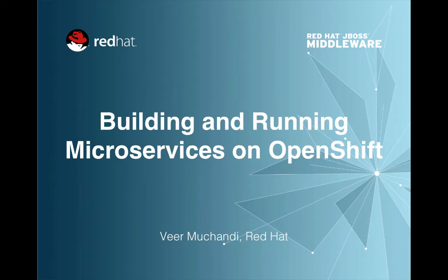Welcome to the third video on building and running microservices on OpenShift. In the last two videos, we talked about how application components run on OpenShift, how they are made up of pods, services, and routes. In the second video, we covered how microservices run on OpenShift and what they are made up of. In this video, we will look at a developer's standpoint on how to create microservices on OpenShift. In the next video, we will cover from the deployment standpoint.